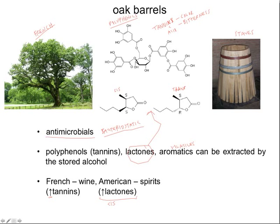This has important consequences in terms of flavors. French oak is preferred in many cases for wines, whereas American oak is more useful for spirits. So the characteristics of a natural product play an important role in the development of the flavors of the food and beverages that we consume — with ethanol extracting these items from the barrels.